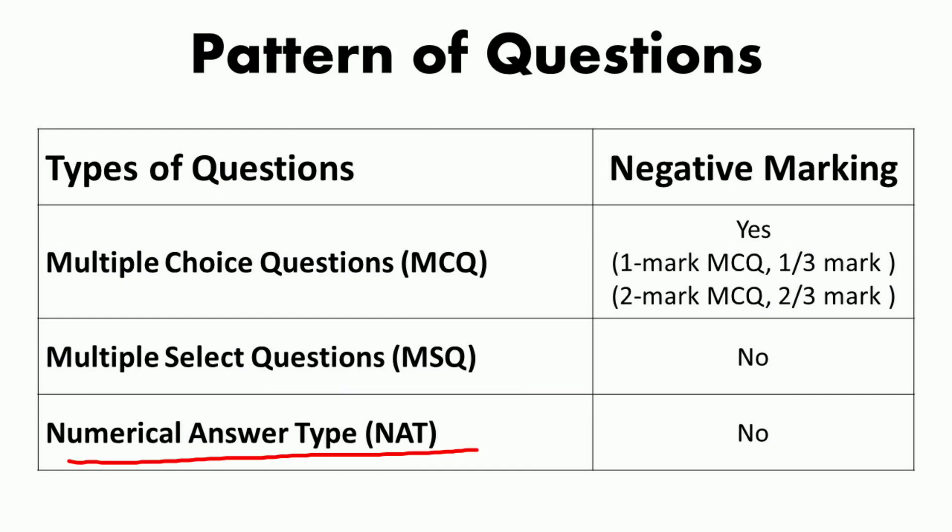Numerical answer type (NAT) questions also carry 1 or 2 marks each. For these questions, the answer is a single real number which needs to be entered by the candidate using a virtual numeric keyboard on the monitor. No choices will be shown for these questions, and the answer may be a decimal number. There is no negative marking and no partial credit for NAT questions.